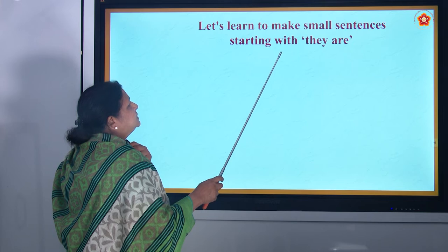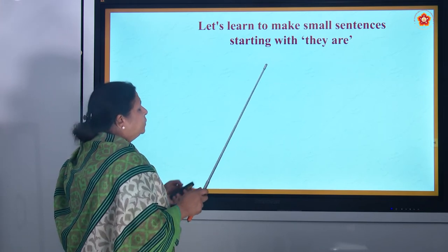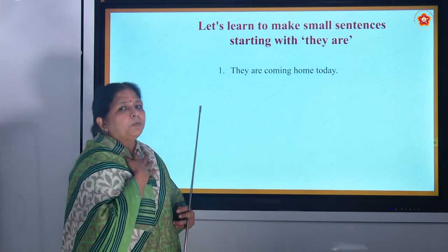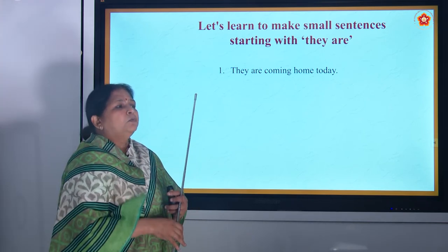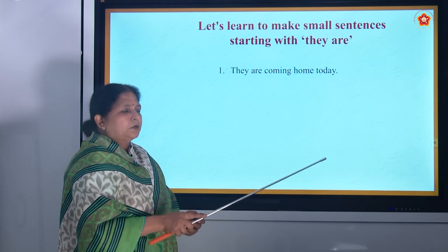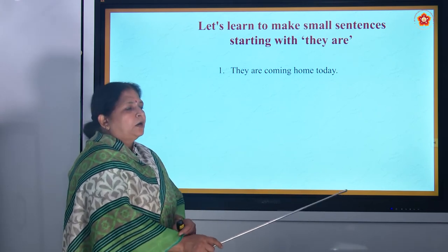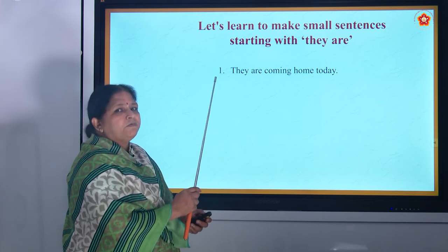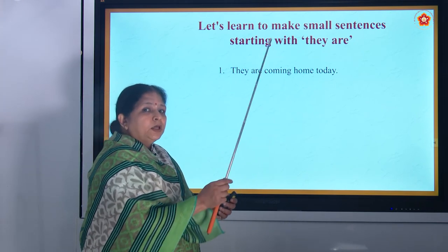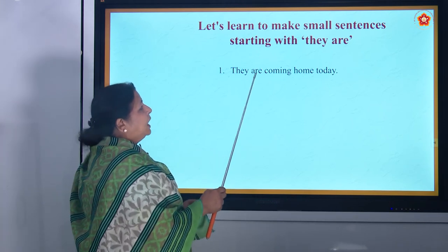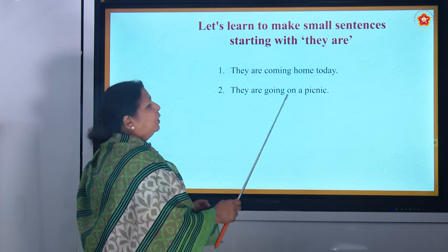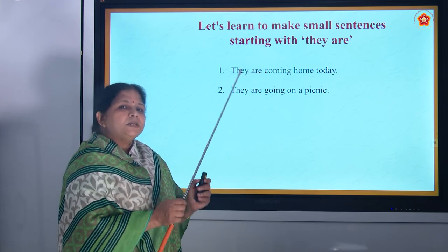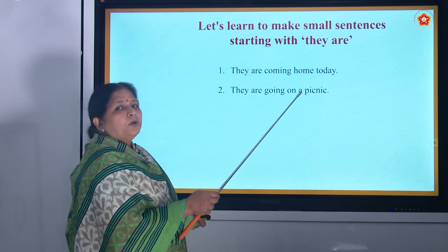Now let us learn to make small sentences starting with 'they are.' When you want to say about a third person — they. They are coming home. They are going on a picnic — for example, 8th standard boys or 10th standard boys, they are going. You are still in 6th standard, so you are not going. They are going on a picnic.